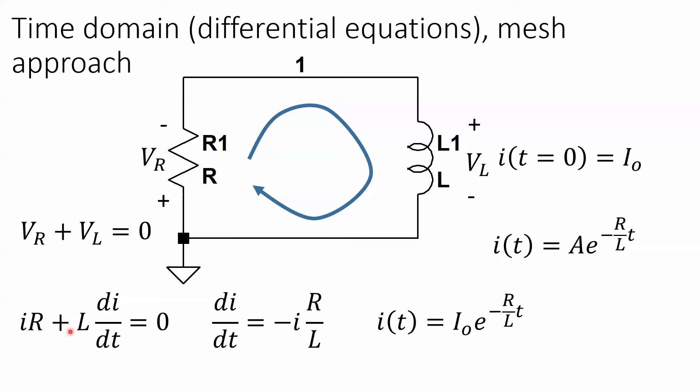Then we replace these voltages with the current equations. What's the voltage here? I times R. What's the voltage across an inductor? L times the derivative of the current with respect to time. We solve, we rearrange our first order differential equation like this, and we get the derivative of something equal to the inverse of the something.